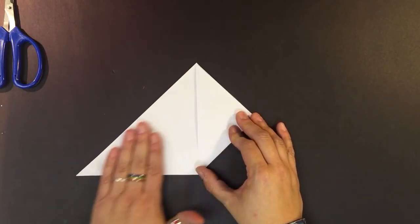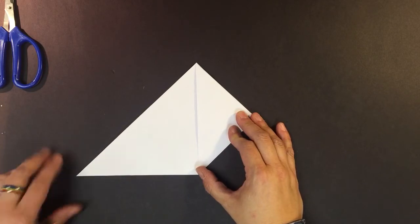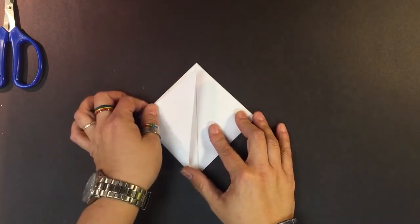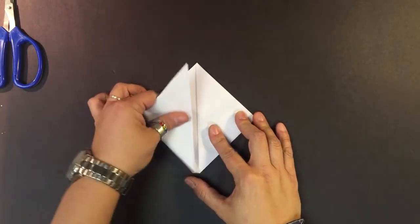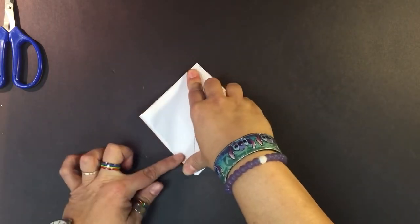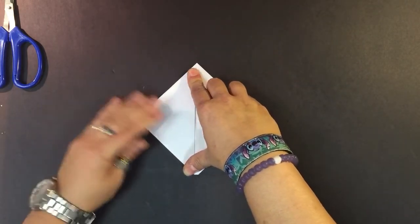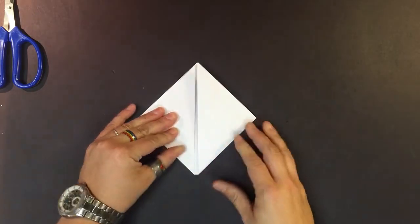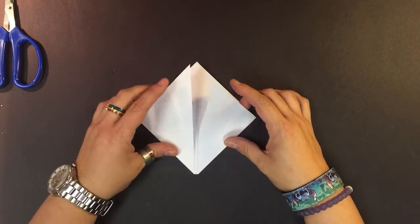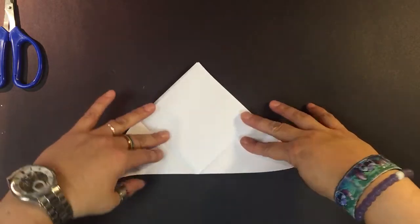You're going to do the same with the opposite side. Take this little corner, fold that up to our top corner just like this, and once again crease really well. These were helper folds. They're going to help us put the bookmark together later, so we're going to open it back up.